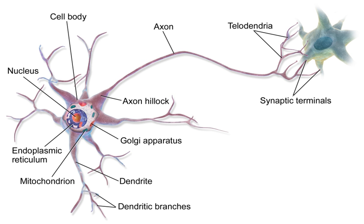The two most common neurotransmitters in the brain, glutamate and GABA, have largely consistent actions. Glutamate acts on several types of receptors, with excitatory effects at ionotropic receptors and a modulatory effect at metabotropic receptors. Similarly, GABA acts on several types of receptors, but all of them have inhibitory effects in adult animals. Because of this consistency, it is common for neuroscientists to refer to cells that release glutamate as excitatory neurons, and cells that release GABA as inhibitory neurons.